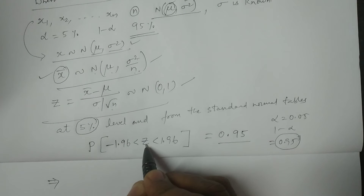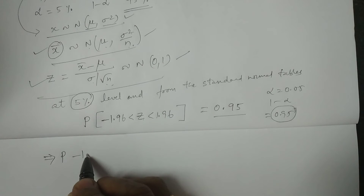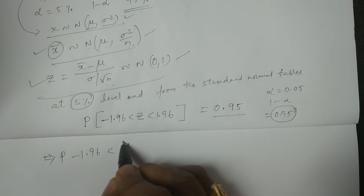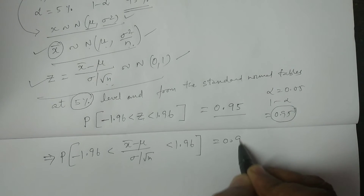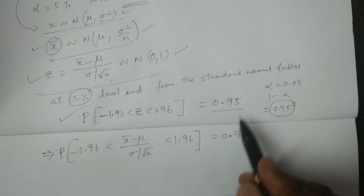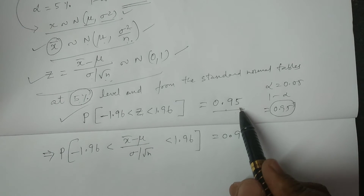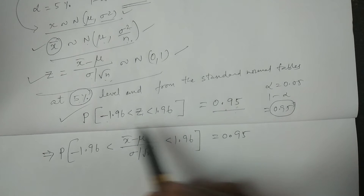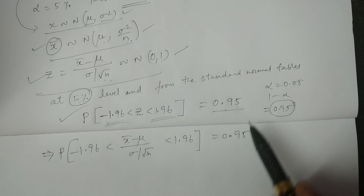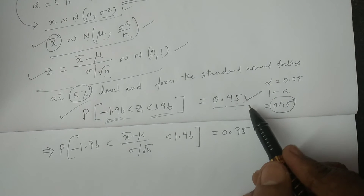Now, since Z = (x̄ − mu) / (sigma / root n), substituting: P(−1.96 < (x̄ − mu)/(sigma/root n) < 1.96) = 0.95. Taking sigma by root n to the left-hand side: P(−1.96 × sigma/root n < x̄ − mu < 1.96 × sigma/root n) = 0.95. This is the result after multiplying both sides by sigma over root n.